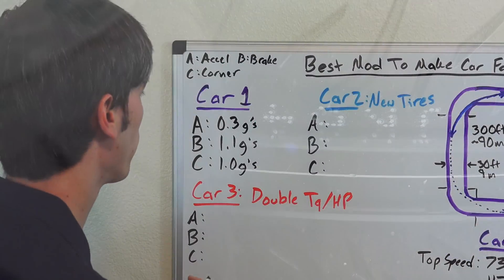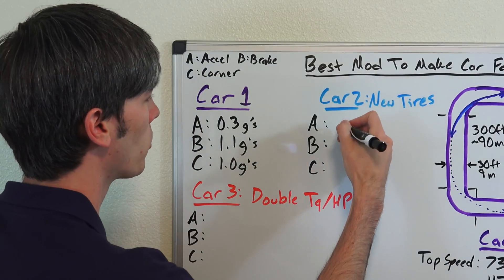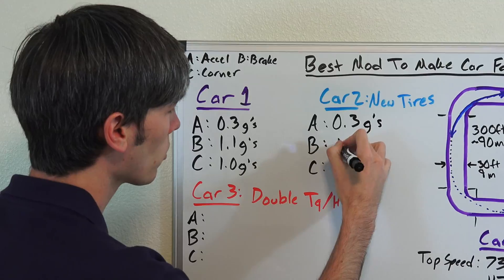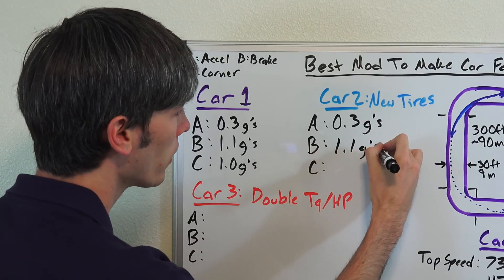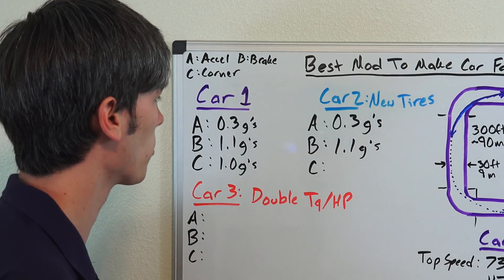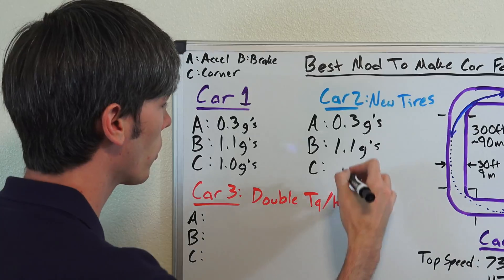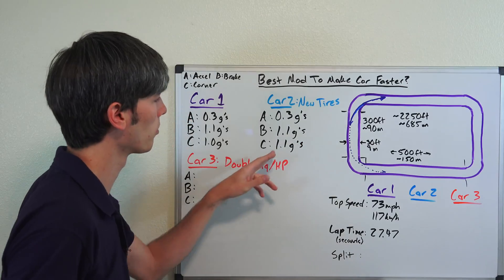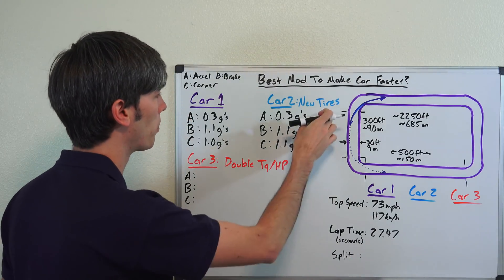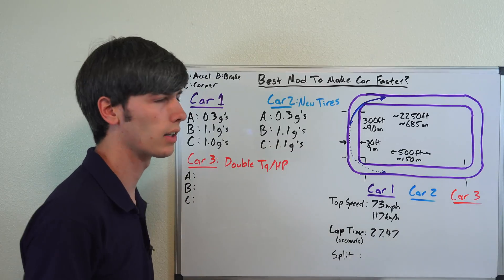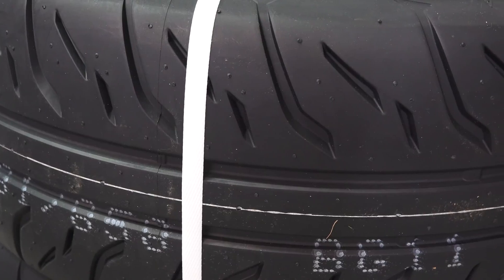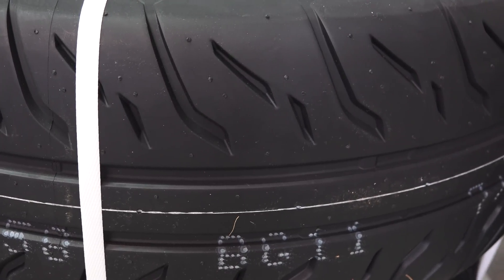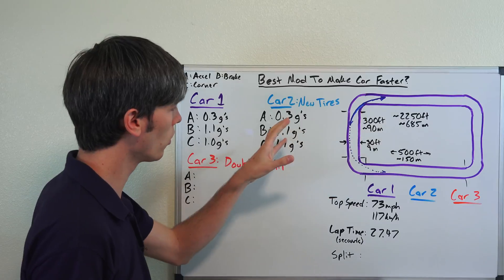So the thing is we want to compare this now to if we were to upgrade to some new tires. Our vehicle with the new tires doesn't have any more power, so it's still going to be accelerating at the same 0.3 G's. Braking we're going to say remains the same—in reality it would improve a bit, but just to keep the math simple we're going to say braking stays the same. And cornering we're going to go up from 1.0 G's to 1.1 G's, a 10% improvement in the cornering force.